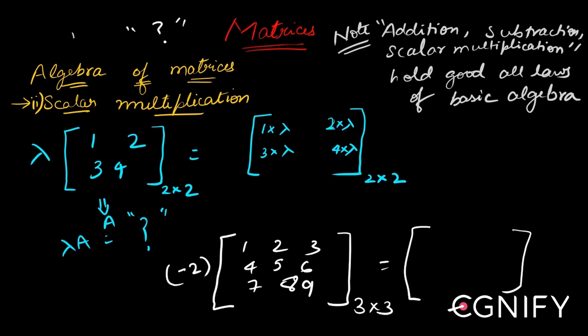So as I already told you, you take the scalar, you take every corresponding element and multiply that corresponding element to the same scalar. So one into minus two, it'll be a minus two, two into minus two, it'll be minus four, then it'll be a minus six, then it'll be a minus eight, minus ten, minus twelve, minus fourteen, minus sixteen, minus eighteen.